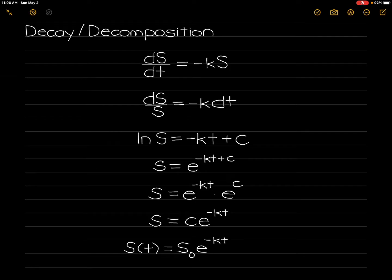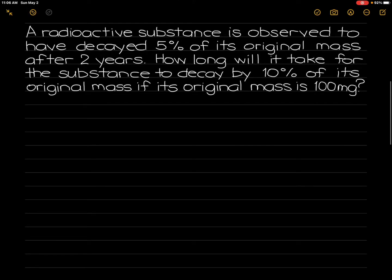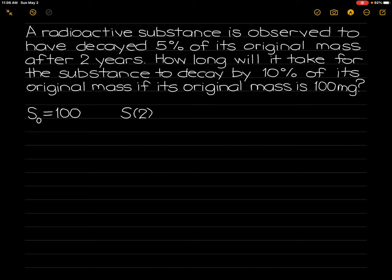We will now use this function to solve for applications. A radioactive substance is observed to have decayed 5% of its original mass after 2 years. How long will it take for the substance to decay by 10% of its original mass if its original mass is 100 mg? We are given the initial amount, which is 100, and the amount present after 2 years, which is 95.